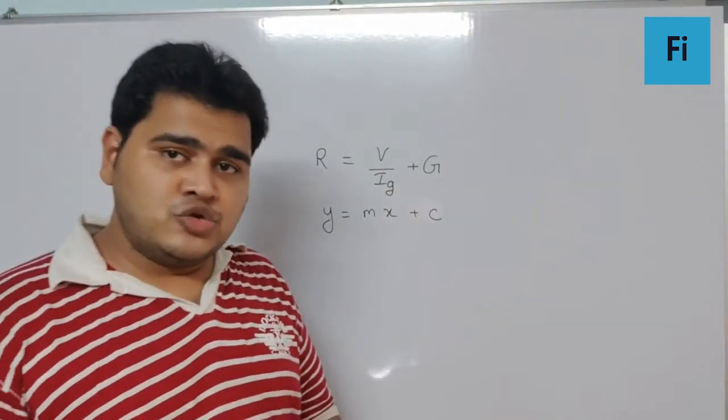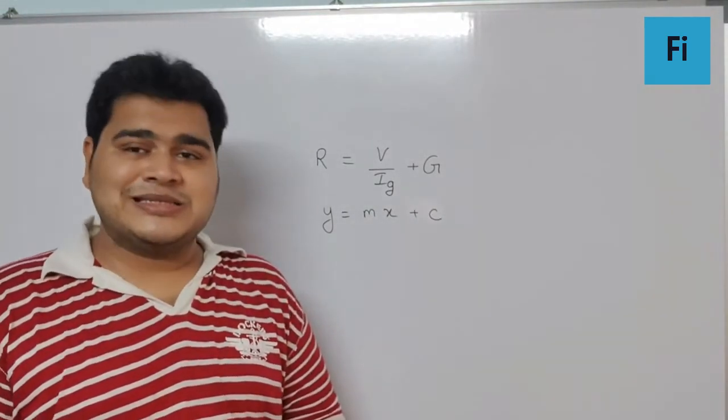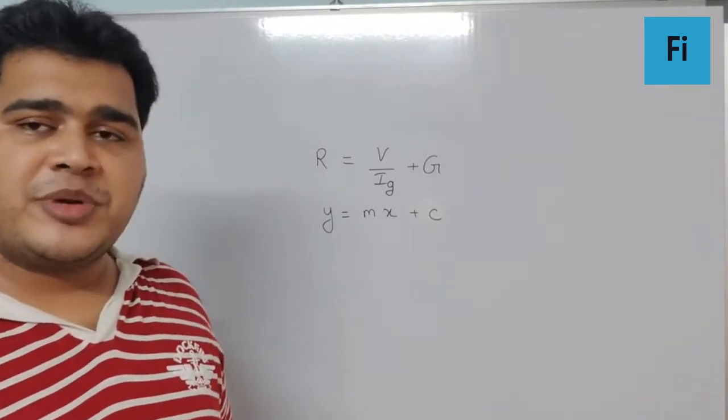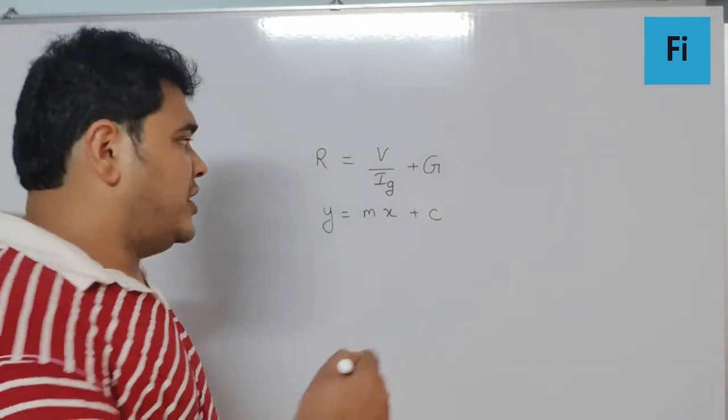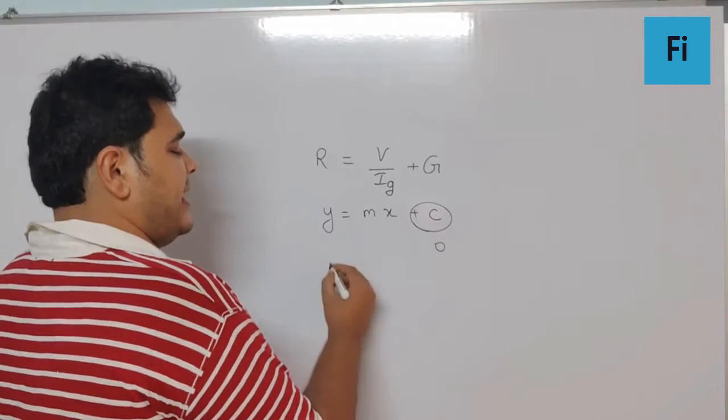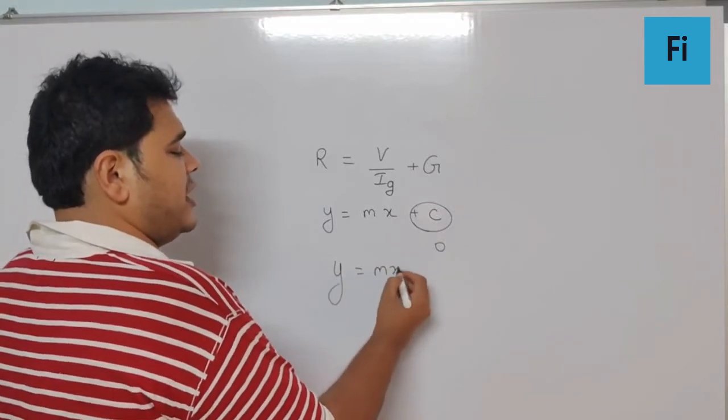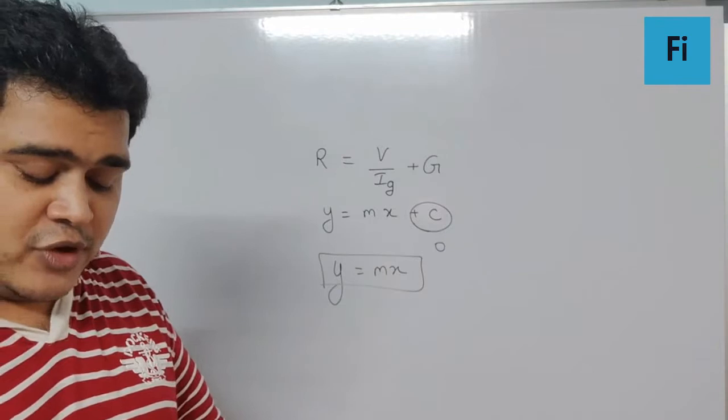Now here if we assume that there was no resistance initially, which means the galvanometer has zero resistance, we can assume this to be 0 and so my equation becomes Y is equal to MX which is an equation for a straight line passing through origin.